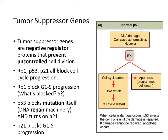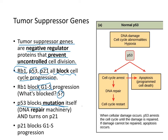Tumor suppressor genes are the opposite of proto-oncogenes — they are negative regulators of the cell cycle that prevent uncontrolled cell division. RB1, P53, and P21 all block the progression of the cell cycle. RB1 blocks G1 progression by blocking DNA synthesis. P53 is a master regulator that recruits DNA repair machinery and activates P21, which also blocks G1-to-S progression. A normal P53 prevents DNA damage and cell cycle anomalies by turning on RB1 and P21.